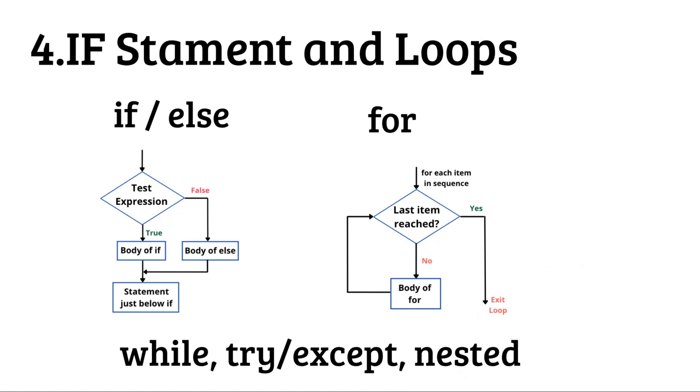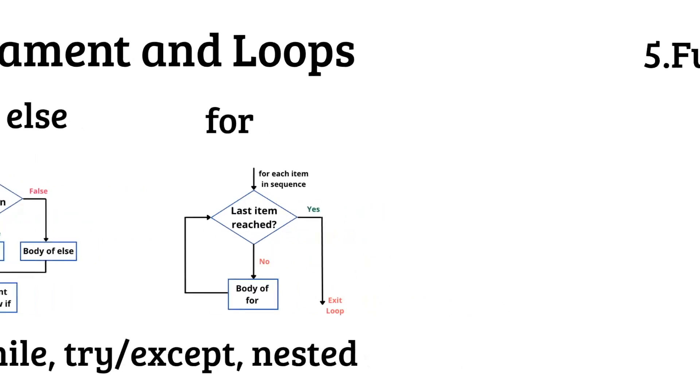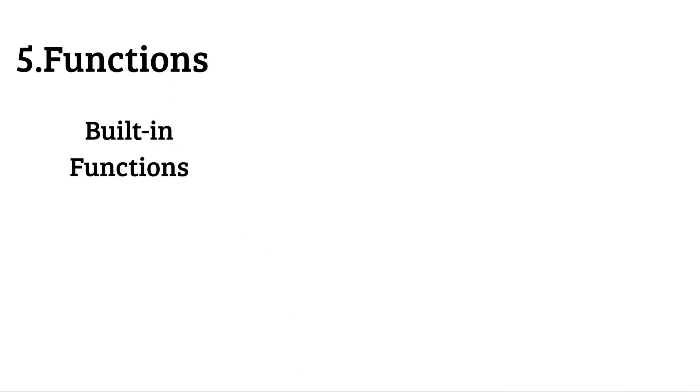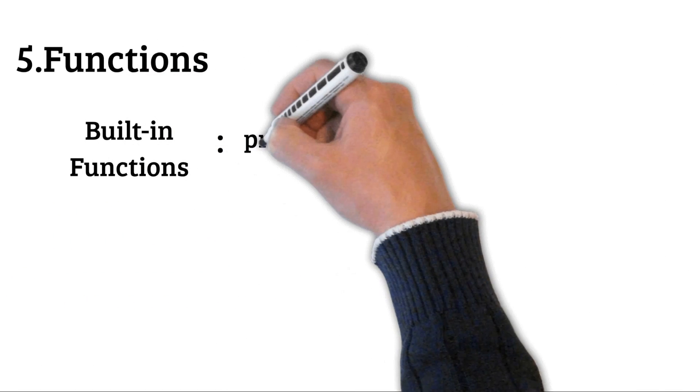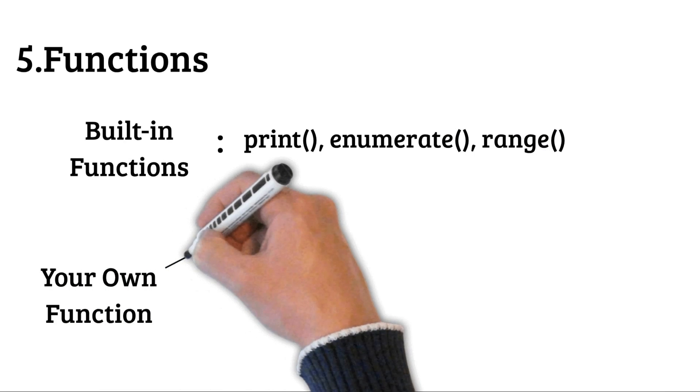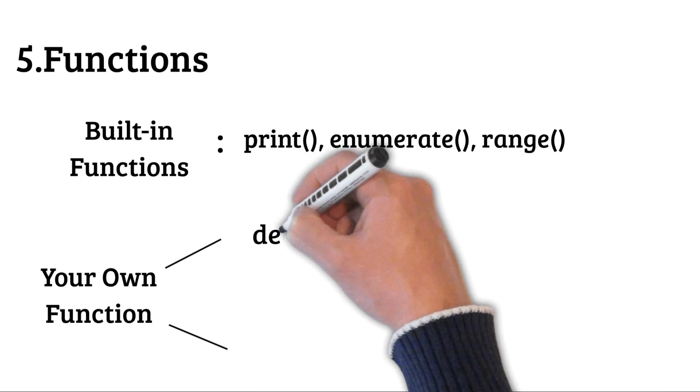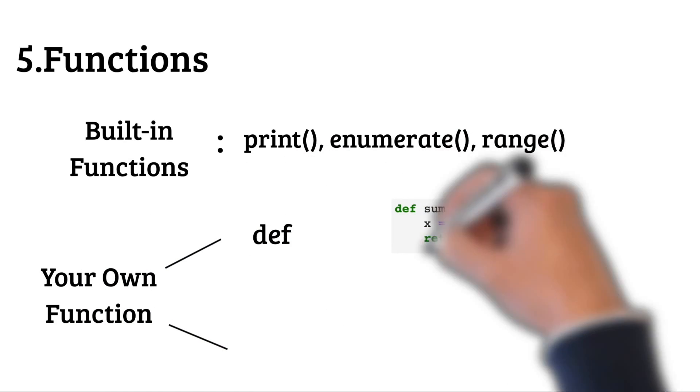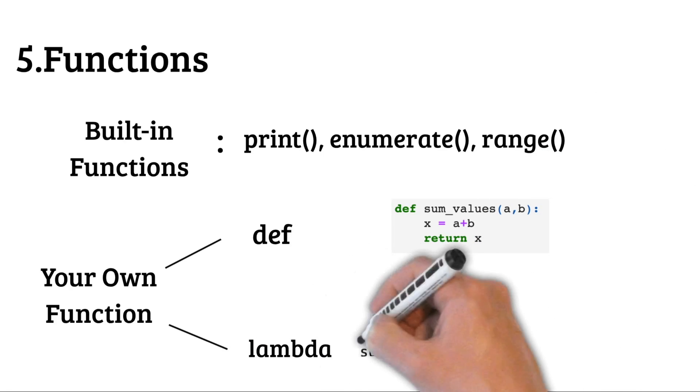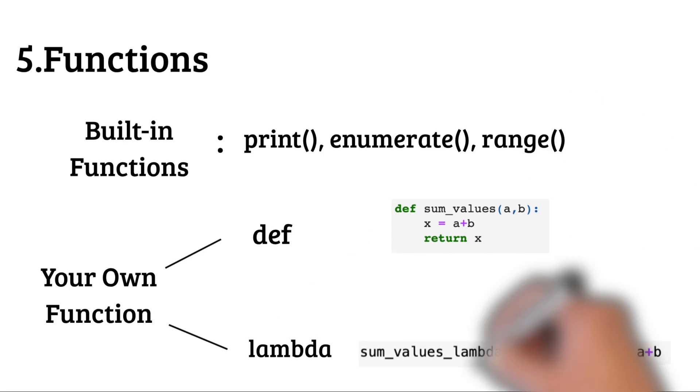In the for loop, we go for each item in a sequence until we reach the last item. Some other things you need to know are the while loop, the try-except statement, and nested loops. To finish learning the basics, you need to learn Python functions: built-in functions such as print, enumerate, and range, and also how to create your own function using the def keyword and the lambda keyword.